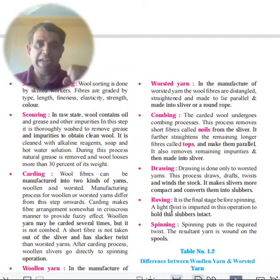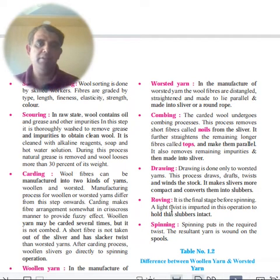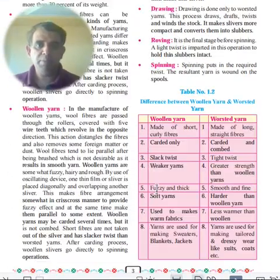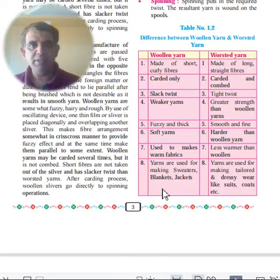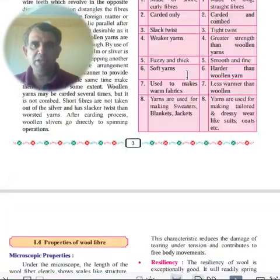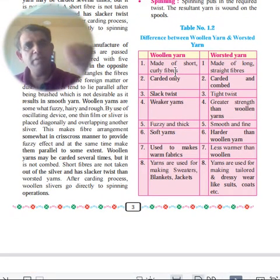Roving: a slight twist is applied in this operation to hold the slubbers intact and make them compact. These are the processing steps for worsted yarn, summarized in a table that is a guaranteed exam question.